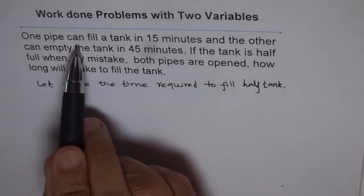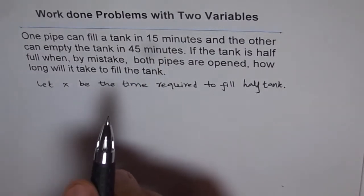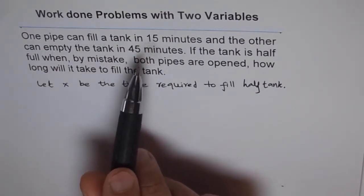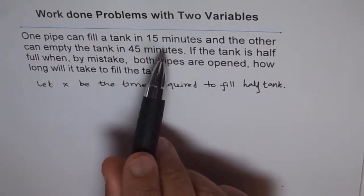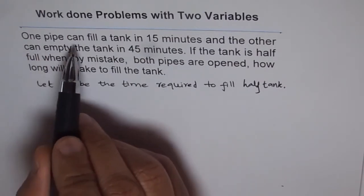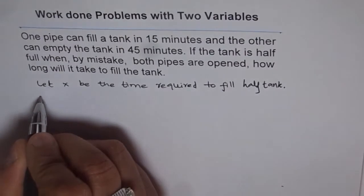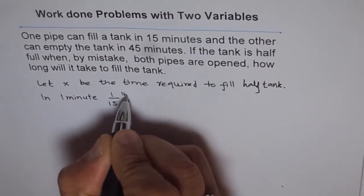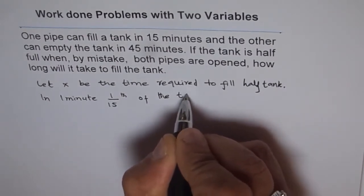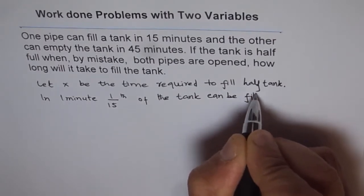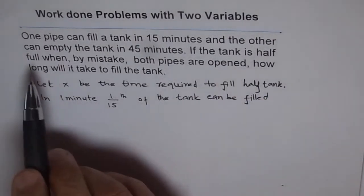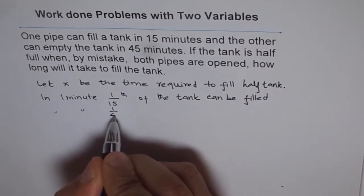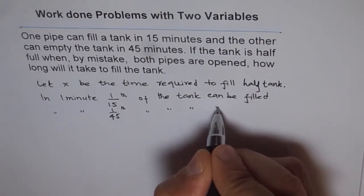One pipe can fill a tank in 15 minutes. So in one minute, what fraction of the tank can be filled by this pipe? When one pipe can fill a tank in 15 minutes, in one minute, one-fifteenth of the tank can be filled by this pipe. The other pipe can empty the tank in 45 minutes — that means in one minute, one forty-fifth of the tank can be emptied.